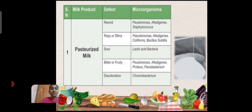The defect of bitter and fruity off-flavors is caused by microorganisms such as Pseudomonas, Acinetobacter, Protease-producing bacteria, and Flavobacterium. Discoloration defects are caused by Chromobacterium.